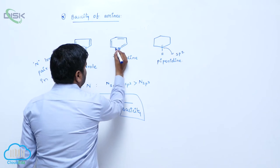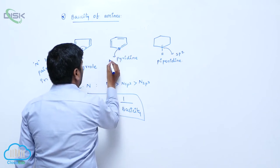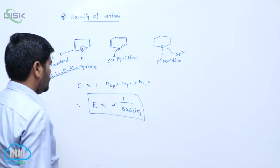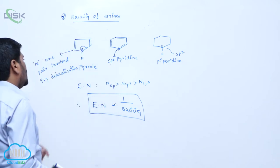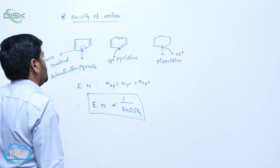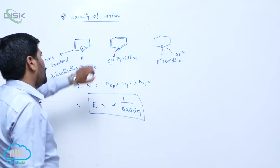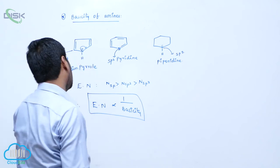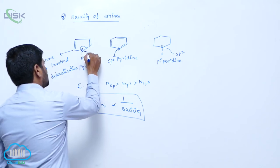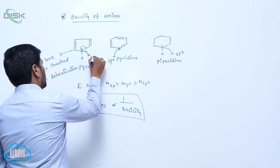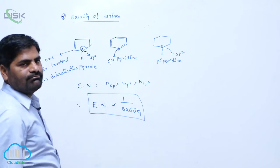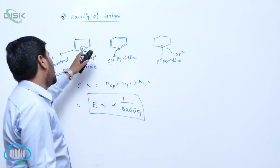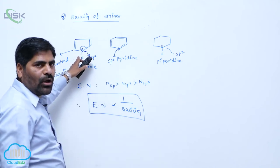So with one sigma, second sigma, and one lone pair of electron, it is Sp2 hybridization. This pyrrole nitrogen is actually Sp3, but its lone pair of electron is involved in delocalization, while pyridine nitrogen is Sp2 and its lone pair is available for donation.